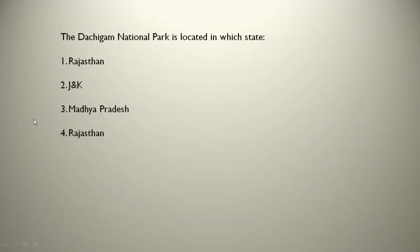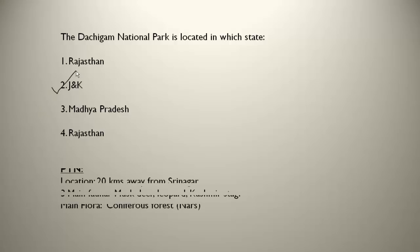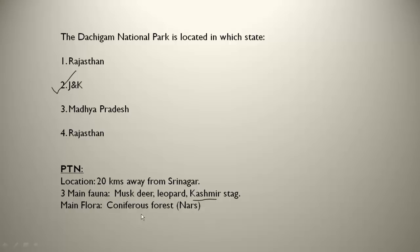The Dachigam National Park is located in which state? Dachigam is located in Jammu and Kashmir, just 20 kilometers away from Srinagar. The three main fauna are musk deer, leopard, and Kashmir stag. The Kashmir stag is found only in this national park. The main flora are coniferous forests, locally called Nars.